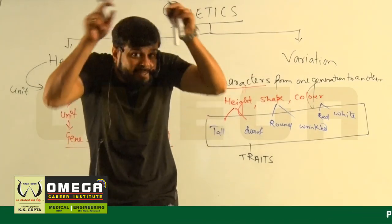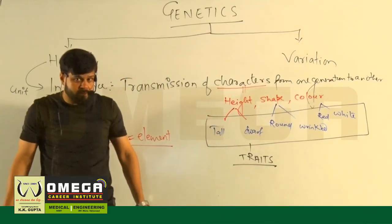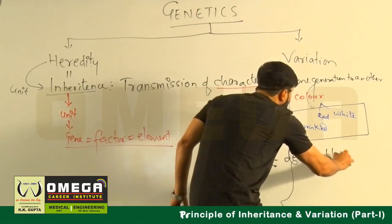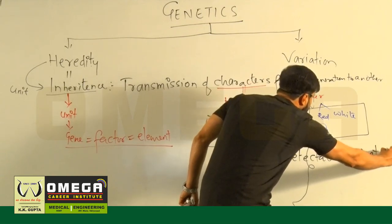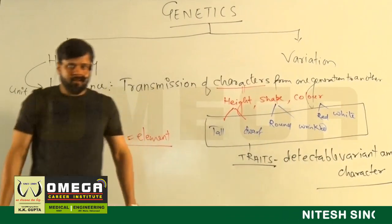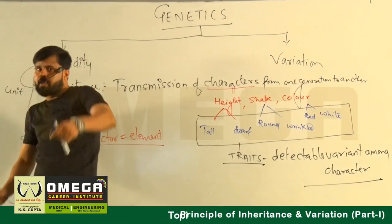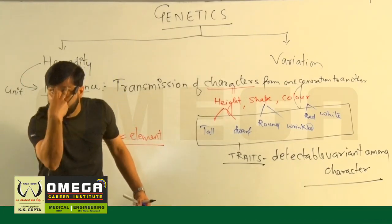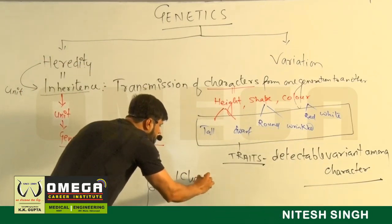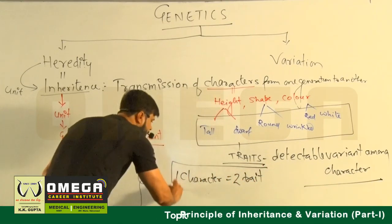So the character and its detectable variants are called traits. A detectable variant among a character is a trait. We have reached the understanding that one character has two traits — for example, height has tall and dwarf.